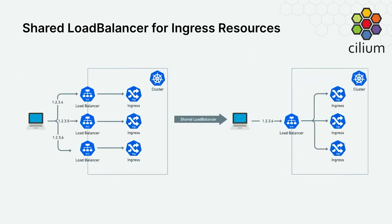We also released a shared load balancer for ingress resources, which makes a lot of sense for cost savings in the cloud. In cloud environments, each Cilium ingress resource would create a dedicated load balancer with a public IP — and that costs money. With Cilium 1.13, you can specify a shared annotation and have a single shared load balancer for many ingress resources running on top of it, reducing cloud load balancer costs significantly.